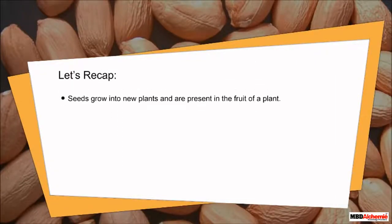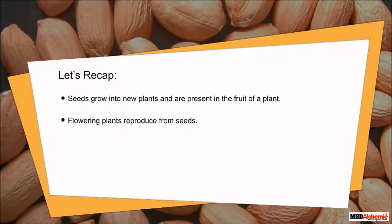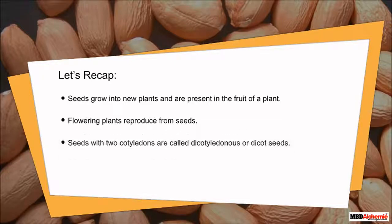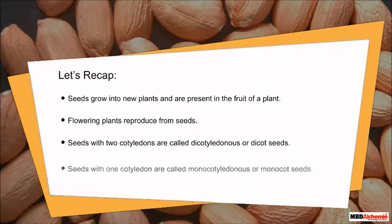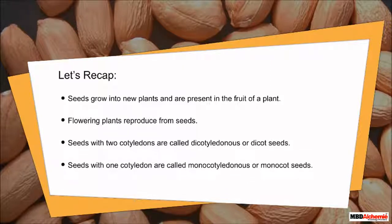Let's recap. Seeds grow into new plants and are present in the fruit of a plant. The structure of a seed includes seed coat, one or two cotyledons, and embryo or the baby plant. Seeds with two cotyledons are called dicotyledonous or dicot seeds. Seeds with one cotyledon are called monocotyledonous or monocot seeds.